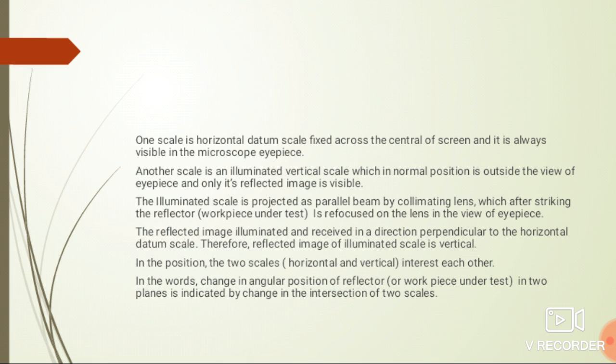The reflected image illuminated is visible in a direction perpendicular to horizontal datum scale. Therefore, reflected image of illuminated scale is vertical. In this position, the two scales horizontal and vertical intersect each other. In other words, change in angular position of reflector in two planes is indicated by change in the intersection of two scales.